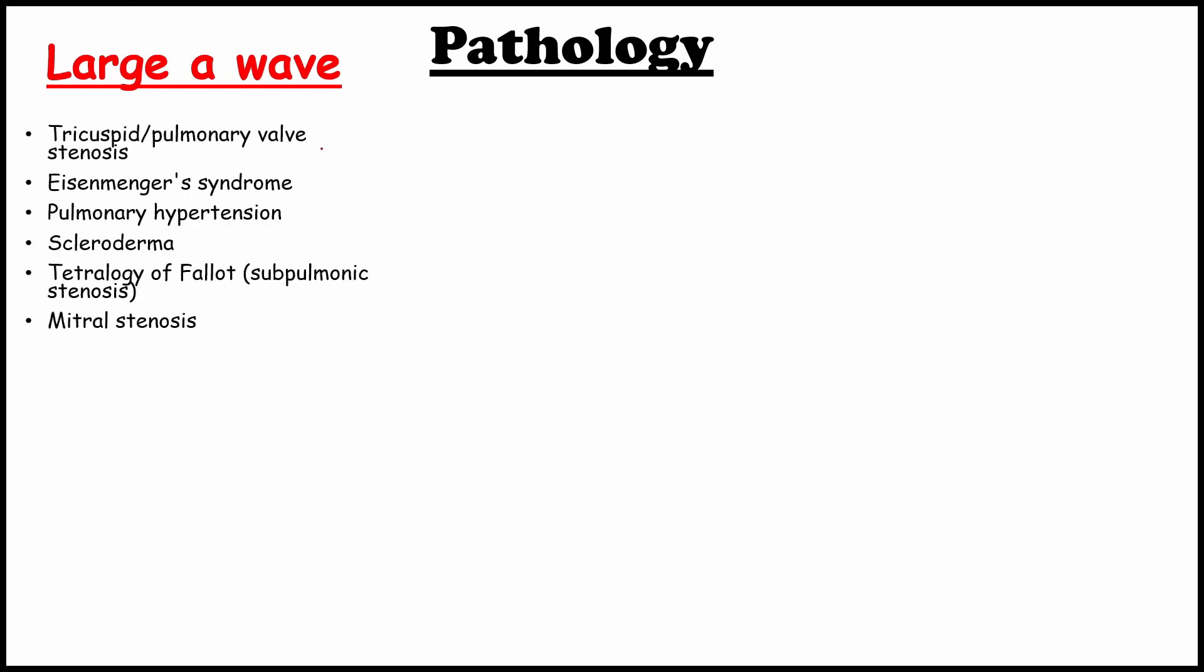Now we will see about some important pathology of these waves. The first is the large A wave. This happens in the condition like tricuspid and pulmonary valve stenosis, Eisenmenger's syndrome, pulmonary hypertension, scleroderma and the most common pediatric congenital heart failure which is tetralogy of Fallot and also in mitral stenosis. In case of right tricuspid stenosis, the blood flow in the ventricle decreases. We already said that A wave happens in atrial systole. But in tricuspid stenosis, the atrial pressure during the atrial systole increases due to reduced outflow. This causes the large A wave.